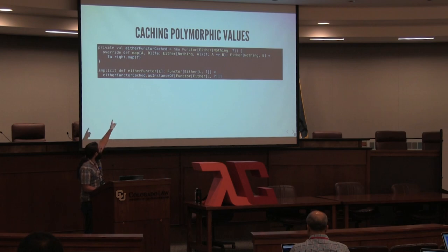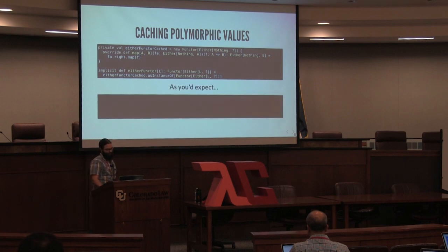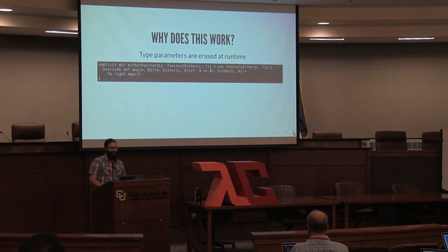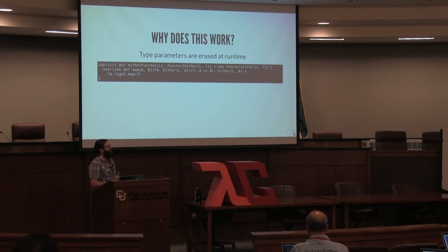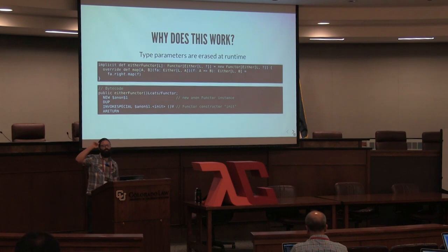We can cache by sticking `Nothing` in for the left side — the functor doesn't operate on the left side, so it doesn't matter and wouldn't compile if you tried to use it. We use `asInstanceOf` to cast to the left side type. Each time we summon the implicit `def`, it calls back into the cached `val` and does a cast. Summoning twice gives the same address — we're not invoking new instances. This works because of type erasure: type parameters are erased at runtime.